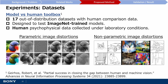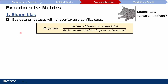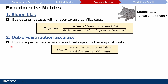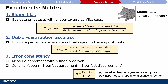Now let's take a look at the three evaluation metrics used. Firstly, to evaluate shape bias, they used one of the non-parametric distorted datasets containing images with shape-texture conflict cues. The degree of shape bias is measured as the fraction of images the model agrees with the shape label. Secondly, out-of-distribution accuracy is measured as the fraction of correctly classified images. Finally, Cohen's kappa was used to measure how consistent the model's errors are with human errors, where a score of plus one is perfect agreement and a score of minus one is perfect disagreement.